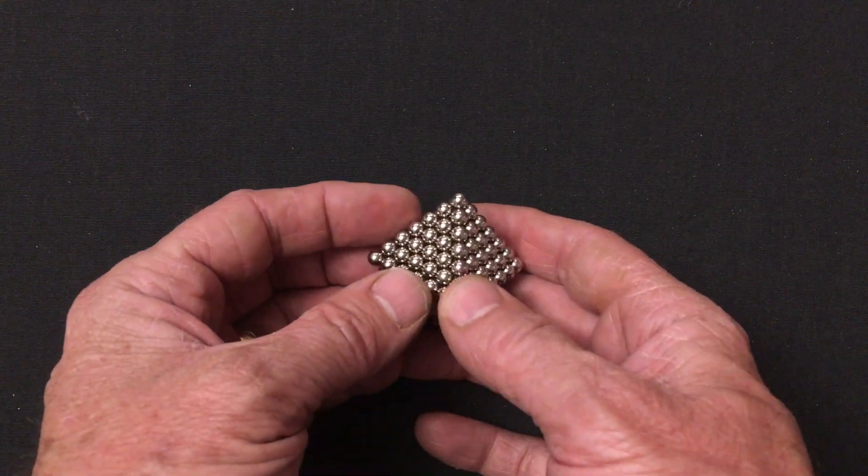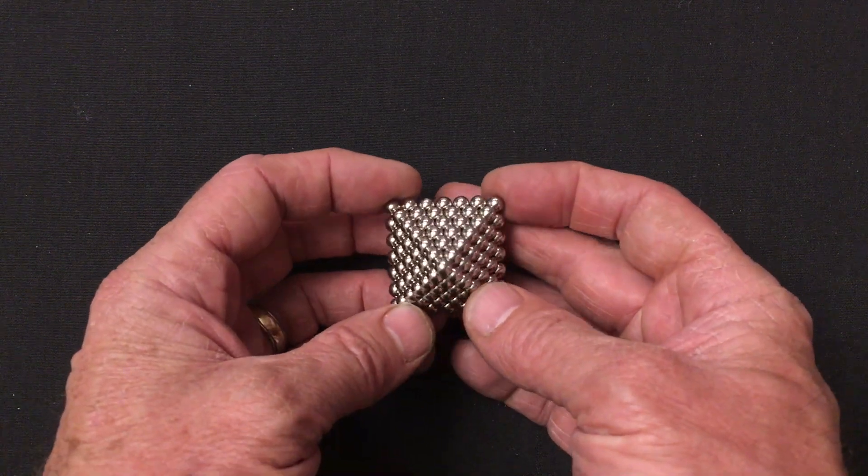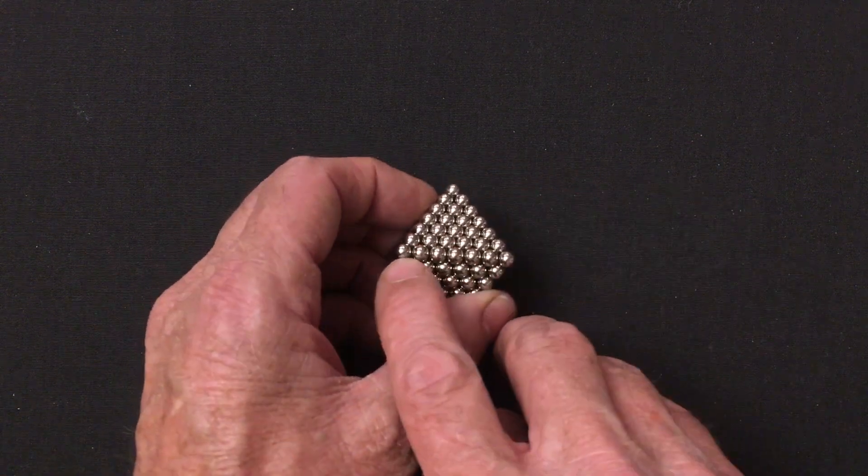Hello everyone. In this video I show how to build this double-walled hollow octahedron of edge count one, two, three, four, five, six, seven.